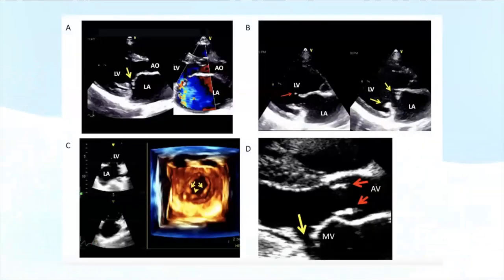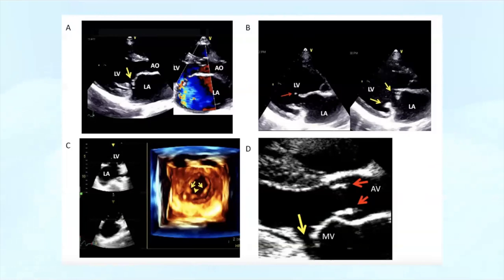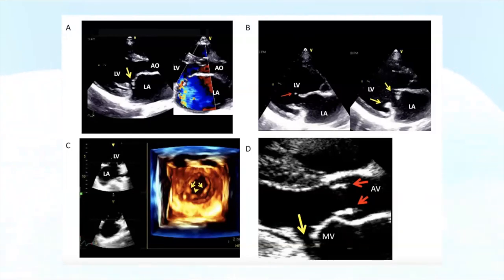This is an echo from a 10-year-old boy with acute rheumatic fever. You can see cordal rupture of the anterior leaflet with severe mitral regurgitation that's eccentric and posteriorly directed. The torn cord is visible in panel B with the red arrow, and nodular thickening of the mitral valve leaflet tips is already starting to occur in the parasternal long axis. Panel C shows a 3D echo demonstrating the nodular thickening of the leaflet tips, and panel D shows the aortic valve is also involved with some thickening and calcification.